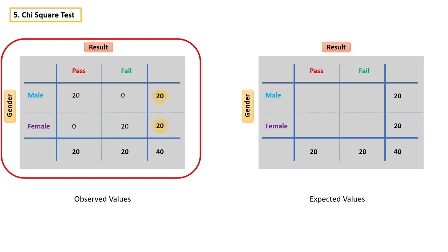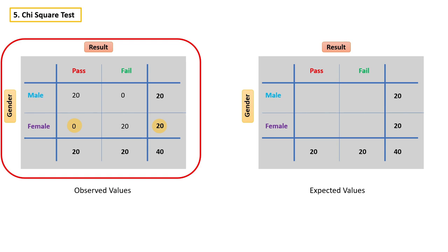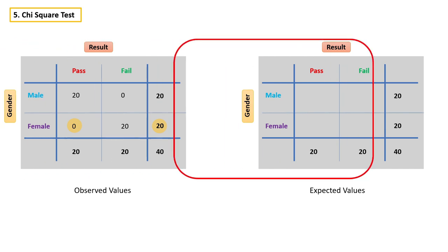Out of 40 students, 20 of them are male and 20 of them are female. Out of 20 male students, all 20 are getting a pass mark. But out of 20 female students, none of them are getting a pass mark. Obviously in this case, gender makes a difference in result. If you look at the values, they are not evenly distributed, which means there is a relationship between gender and result. But how would the table look if there is no relationship between gender and result in this case?